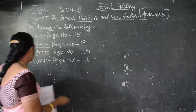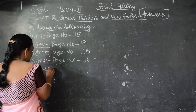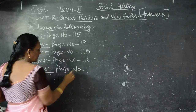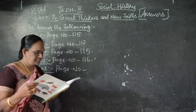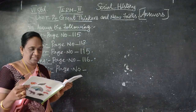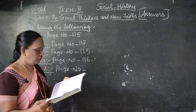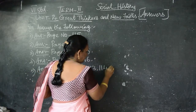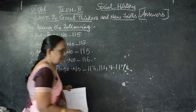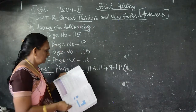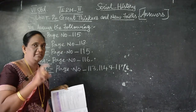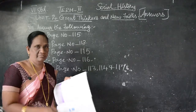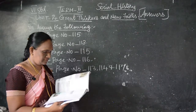Fifth question: Did Jainism or Buddhism flourish in the Sangam period? Give any two evidences for each. It is on page numbers 113, 114, and 117. First, we will look at Jainism.